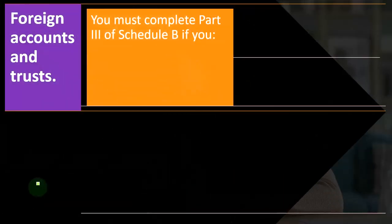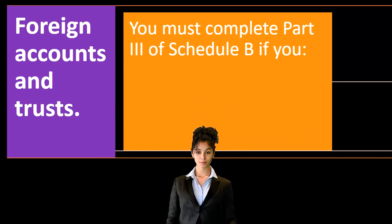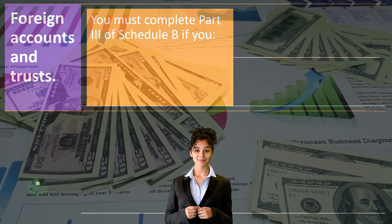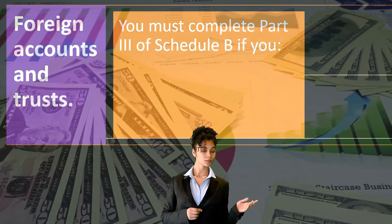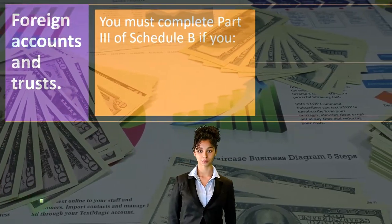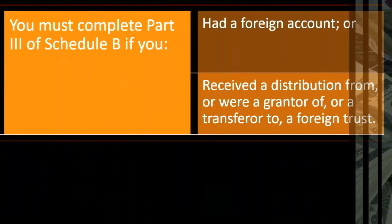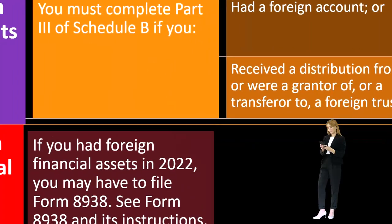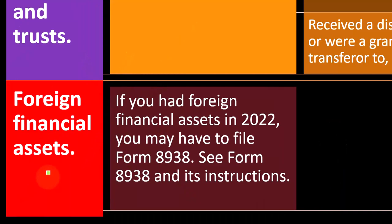Foreign accounts and trusts: you must complete Part 3 of Schedule B if you had a foreign account or received a distribution from, were a grantor of, or a transferor to a foreign trust. We'll cover Schedule B in more detail later. Also, if you had foreign financial assets in 2022, you may have to file Form 8938 — see Form 8938 and its instructions for more detail.